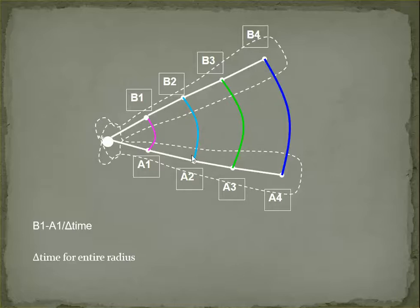So A1 versus A2 versus A3 versus A4. The radius from the center of rotation to A1 is shorter than the radius from the center of rotation to A4.